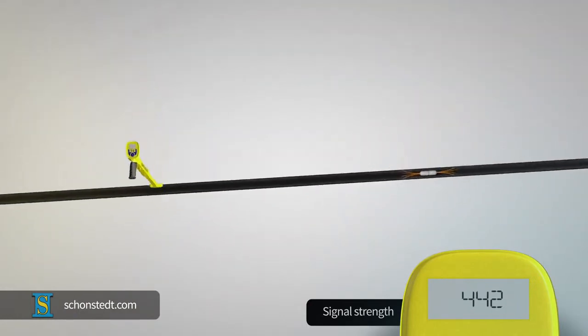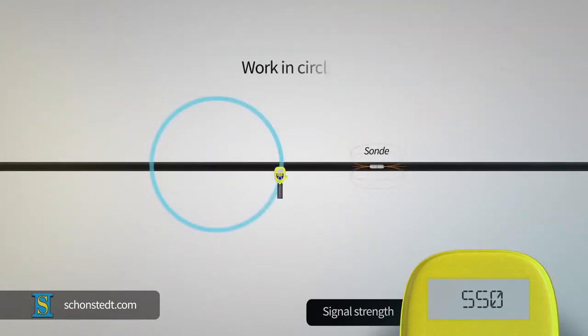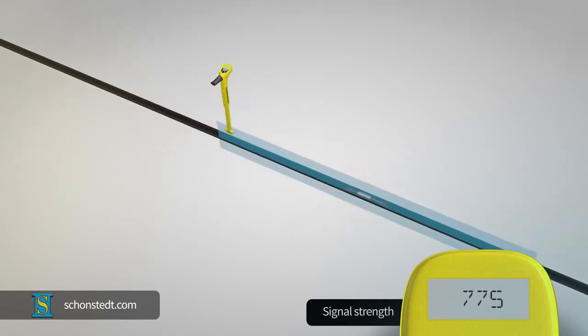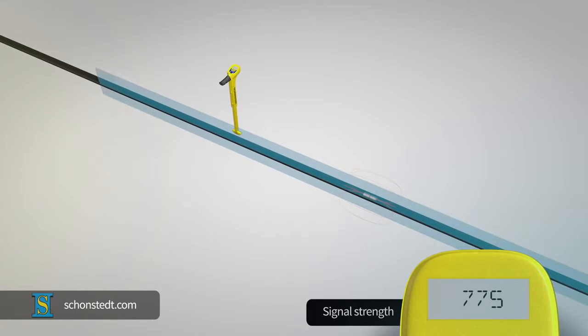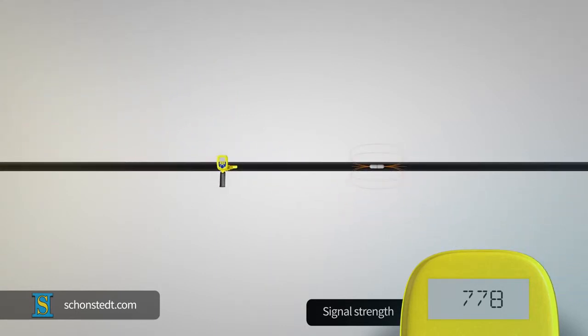To approach the sonde from a distance, it is best to work in circles while trying to determine where in the circle the signal is stronger. At that point, the sonde axis and the sensor axis are on the same plane. Keeping that orientation of the sensor, without rotating the receiver at all, move along that axis to the left and the right to determine in which direction the signal becomes stronger.